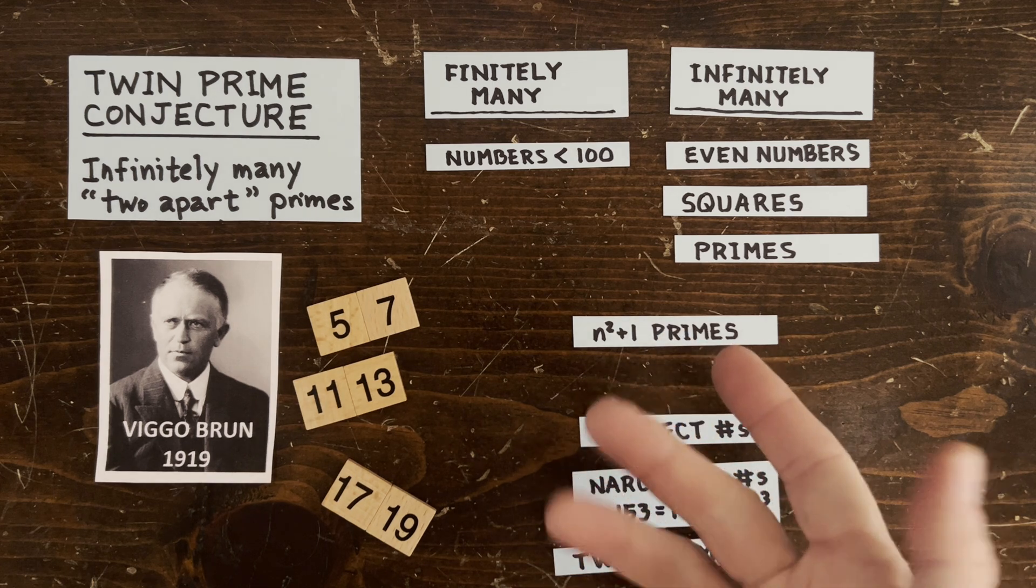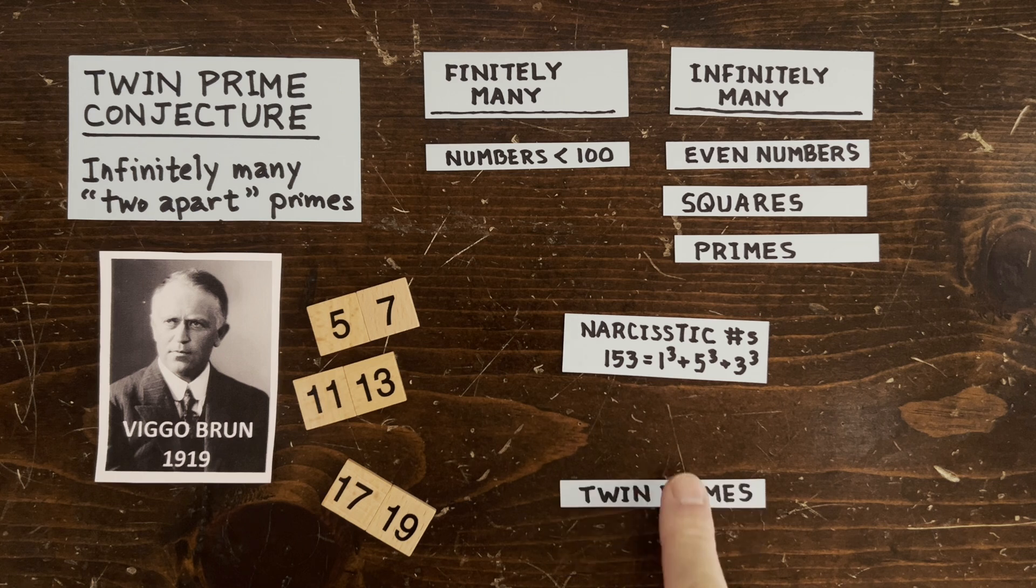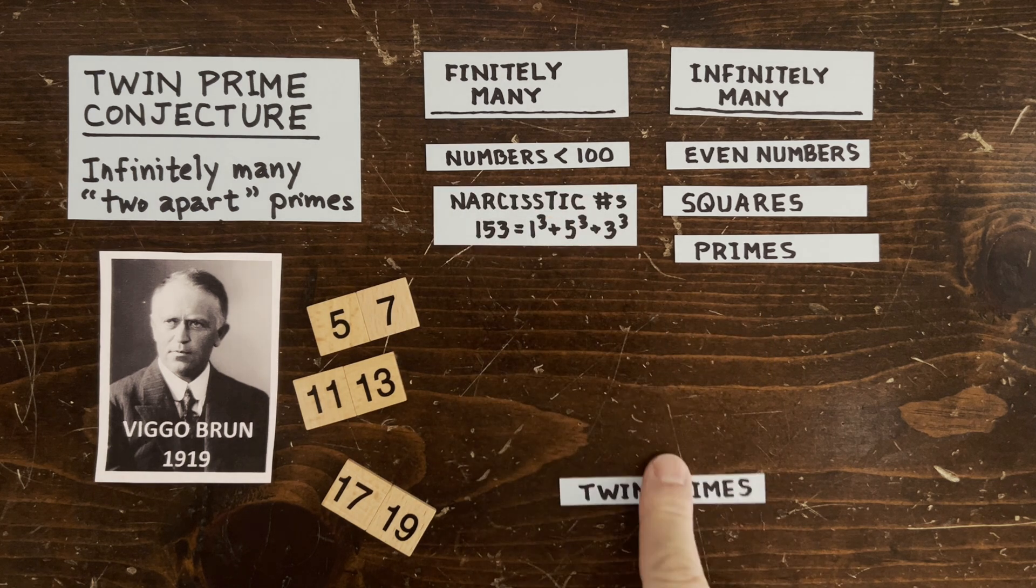Primes of the form n squared plus 1? Nobody knows. Perfect numbers? Nobody knows. Narcissistic numbers? There's 88 of them. Twin primes? Nobody knows.